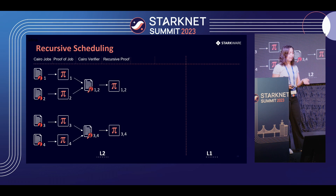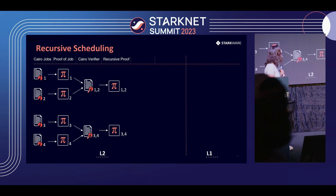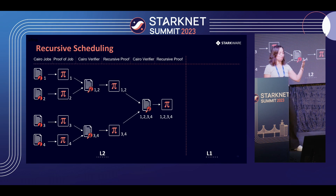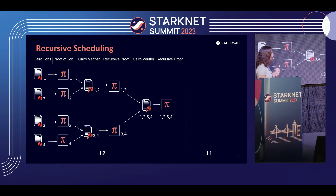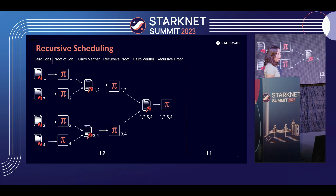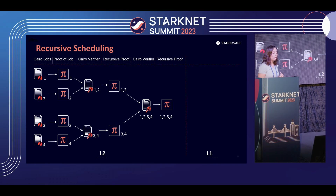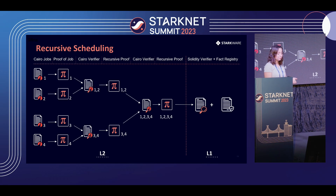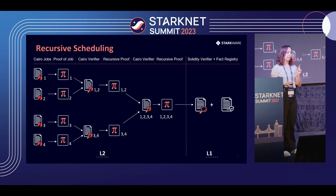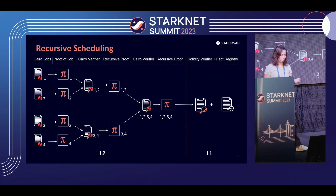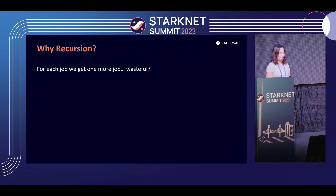We can do this again and again. Now we are left with two proofs in terms of four proofs, and we can repeat this process until we get a single proof of the verification of the proof of the verification, and so on. This is what we call the recursive tree. Its leaves are the original jobs, and each step is the proof of the verification of the previous layer. When this tree is big enough — meaning enough jobs are in the leaves, or when jobs have been waiting long enough — we send the last proof to the verifier on-chain, which verifies that the last proof is valid and writes the unique identifiers of each original job to signal they were proven and verified correctly.